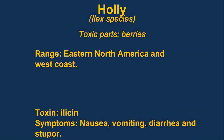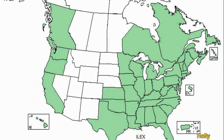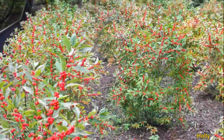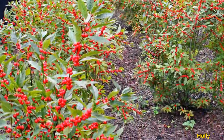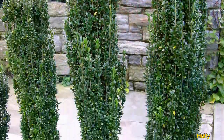The poisonous part of hollies are the berries. The berries of all species are reported to be poisonous — the toxin is ilicin. The main problem is they're very attractive and children could eat them.